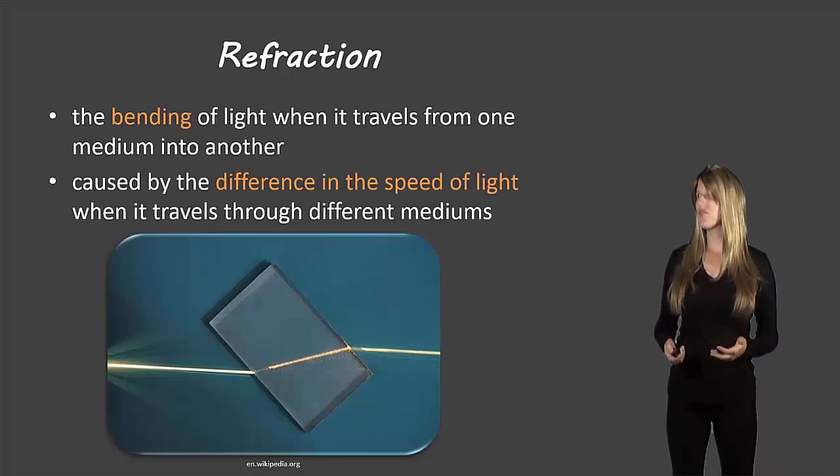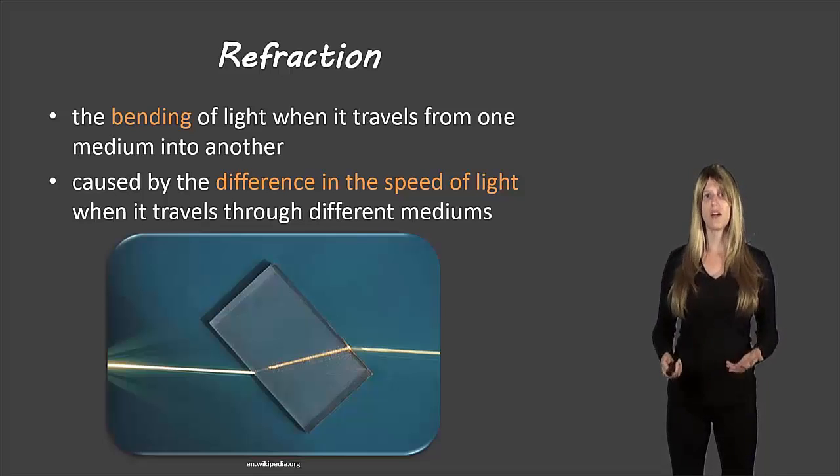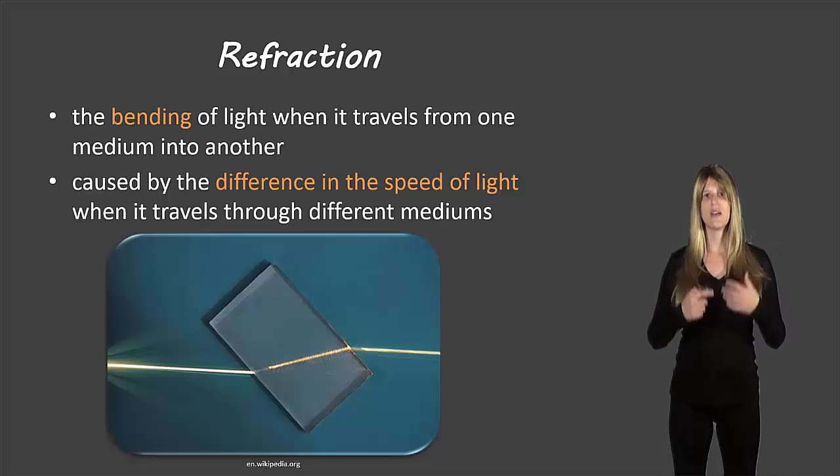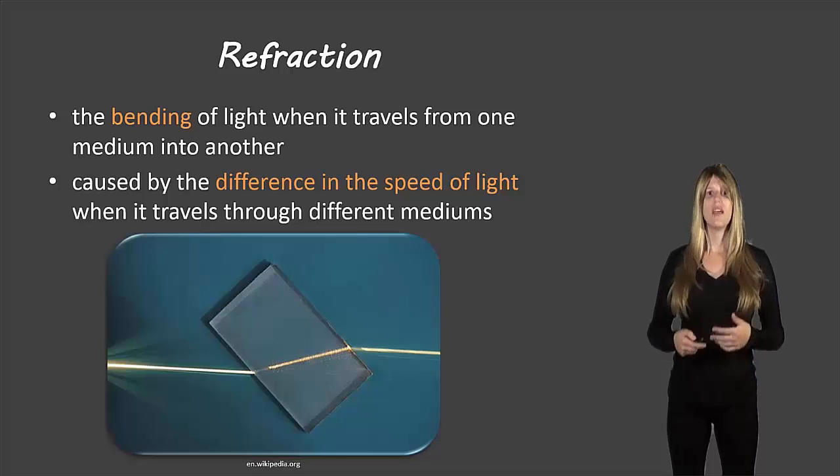And refraction is caused by the difference in the speed of light when it travels through the different mediums. So often we talk about the speed of light. Well, the speed of light depends on the medium that light is in. The normal number that we're used to hearing about the speed of light is light in a vacuum. So when we talk about outer space, but when light comes down to earth and it's traveling through air, it actually slows down. If you have light traveling through water, it slows down even more. If light's traveling through diamonds, it slows down even more than that. So depending on the medium that the light is in, it will slow down compared to the speed of light in the vacuum.